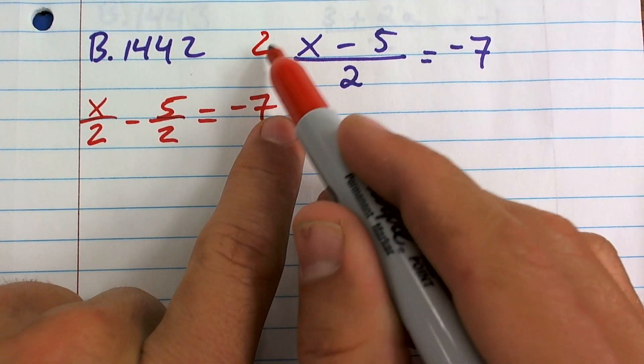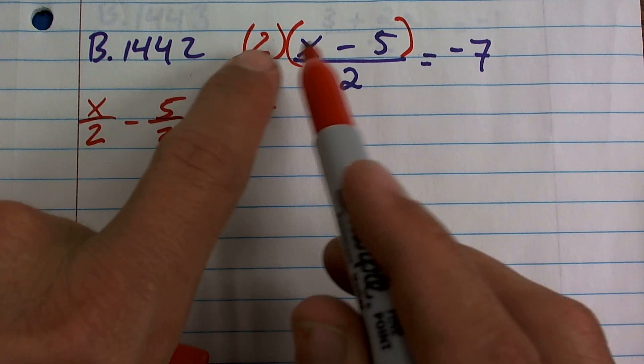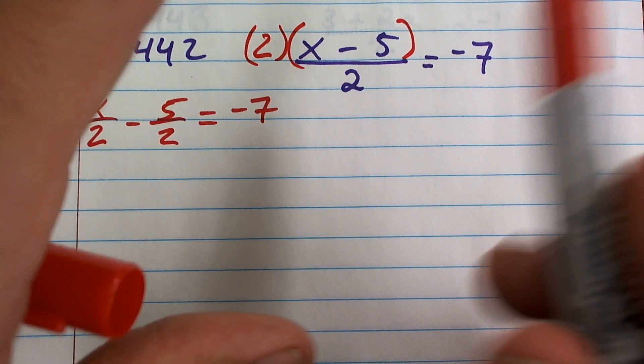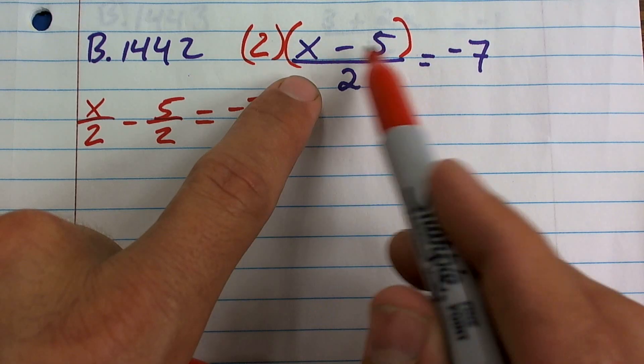Well, I'm going to multiply by two. Now, remember, you're not multiplying two by x. You're not multiplying two by negative five. You're multiplying the two times this whole term, or this whole expression.